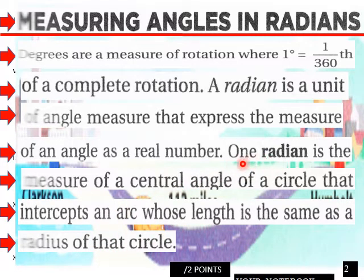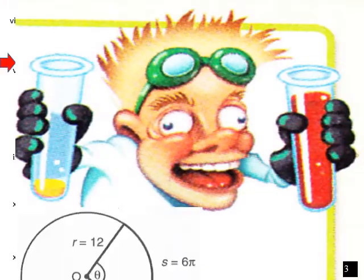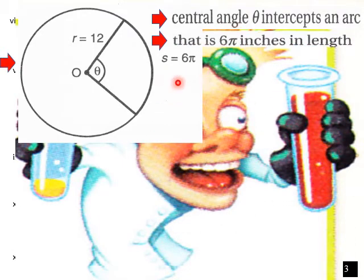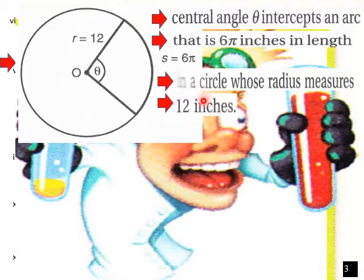So what does all that mean? In this situation, we have a radius equal to 12. Here's one radius and another radius. S here equals 6π. The central angle theta intercepts an arc that is 6π inches in length, in a circle whose radius measures 12 inches. So with a radius of 12 inches and this angle theta, the length of this arc would be 6π.